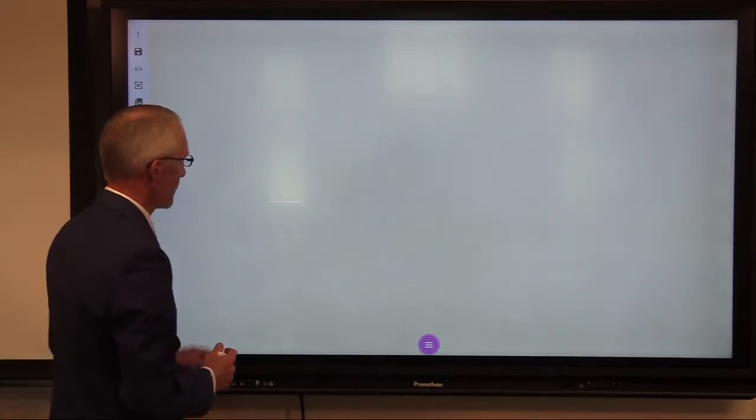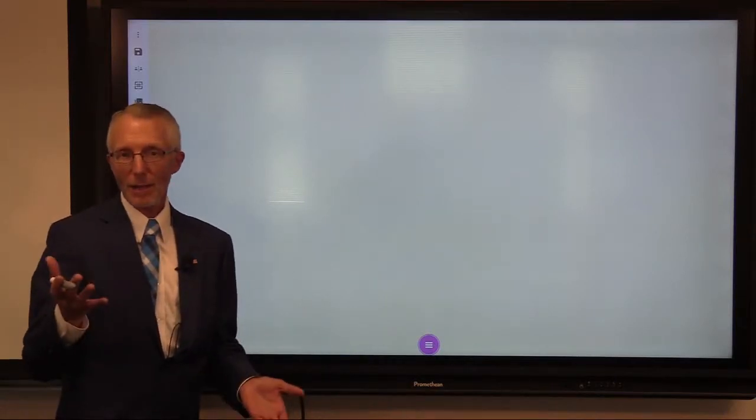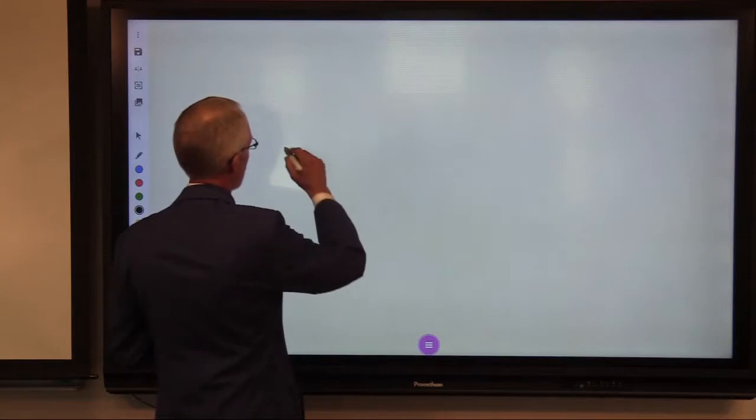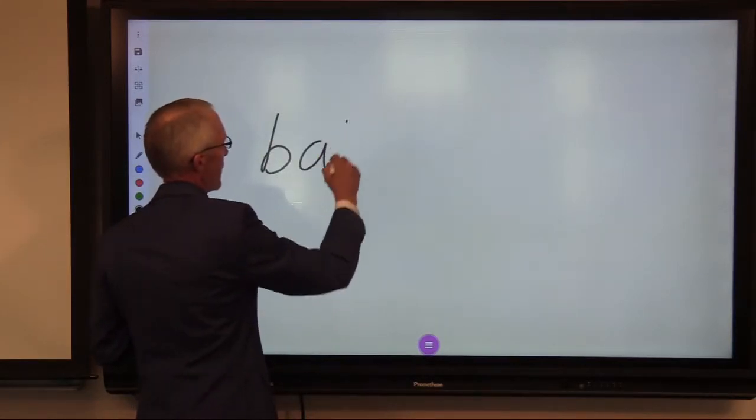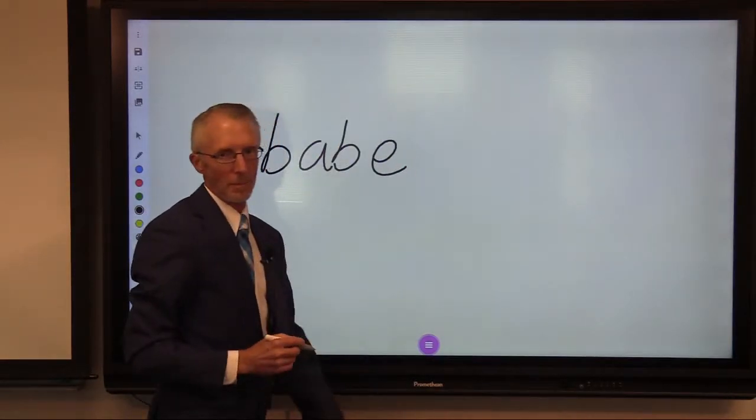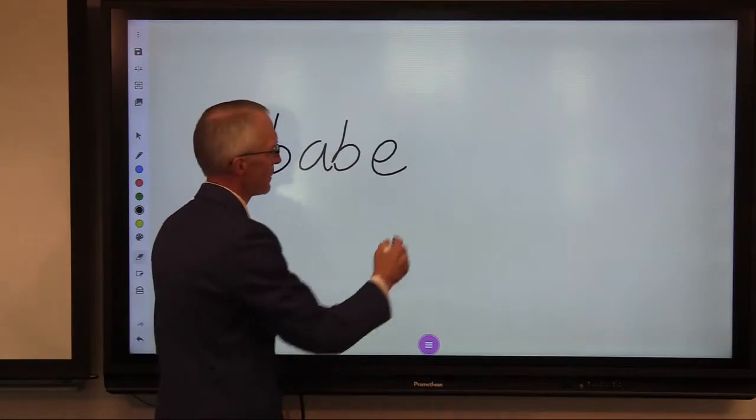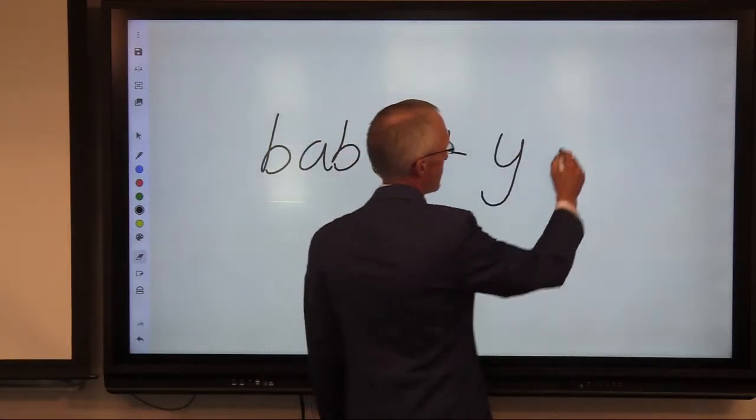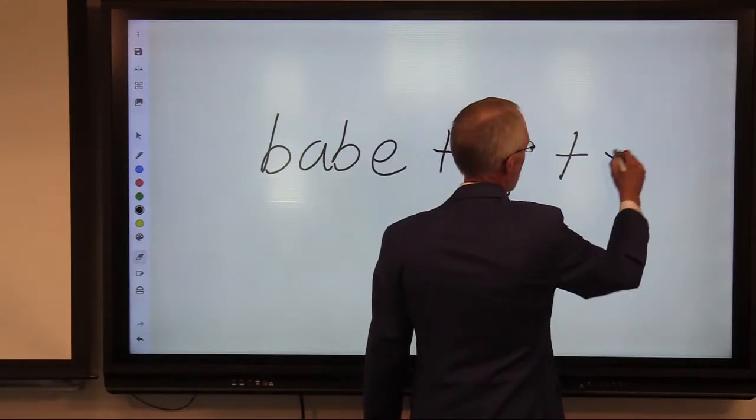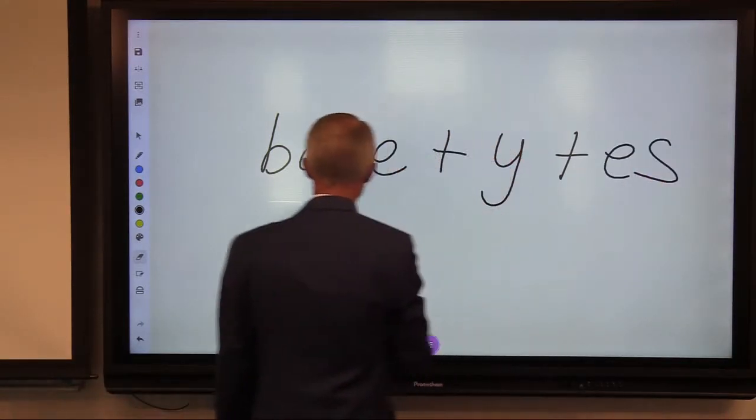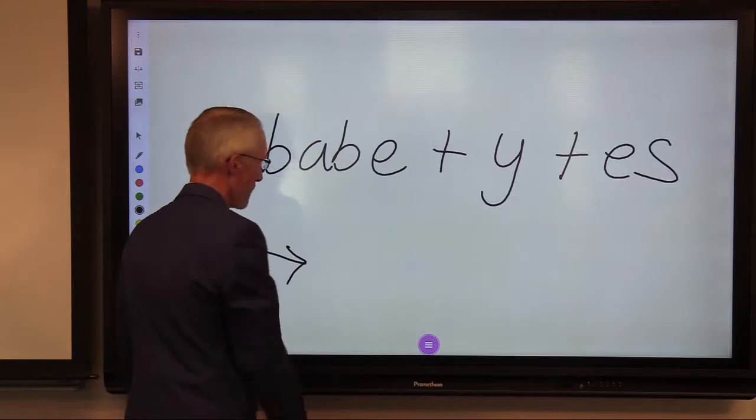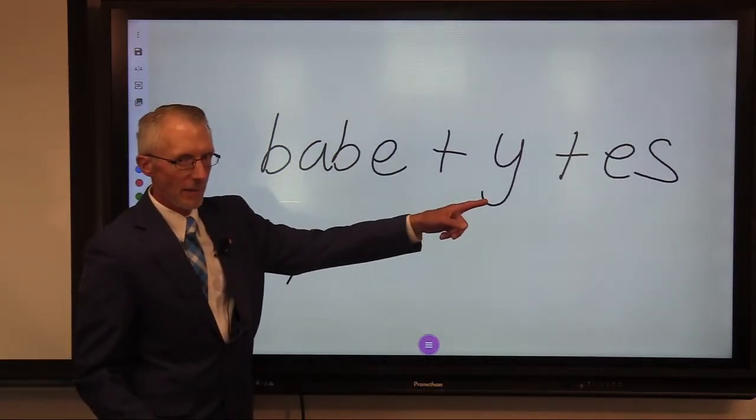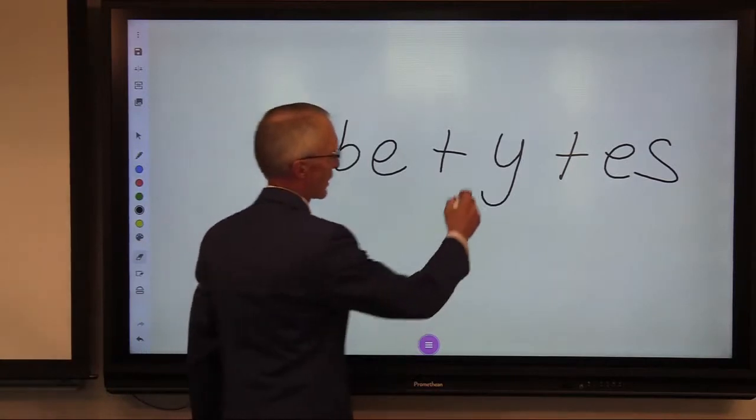And our last one is a Y-I toggle. So we may have something like this: B-A-B single non-syllabic E plus Y plus E-S rewritten as. And here we would always start at that and work towards the base.